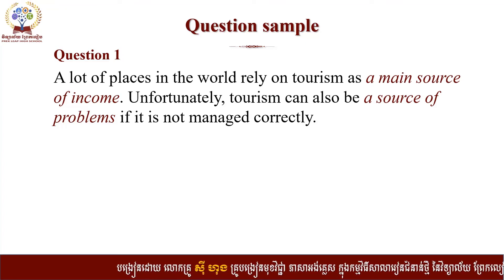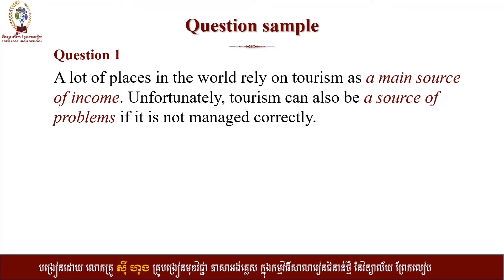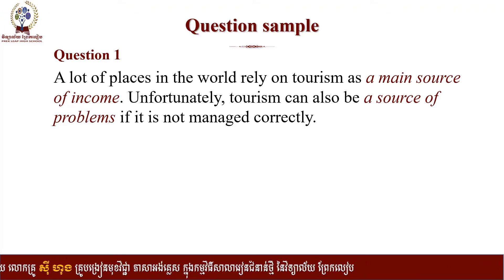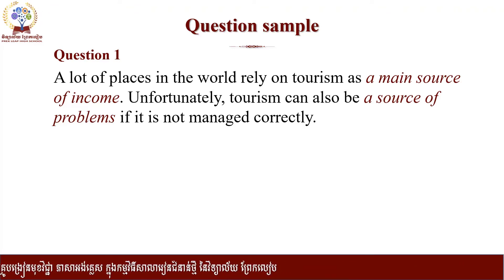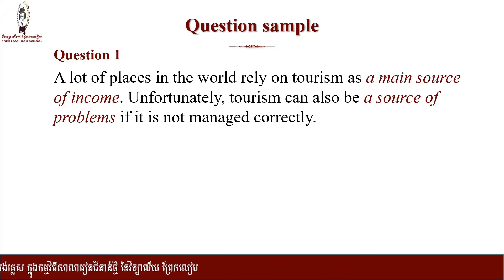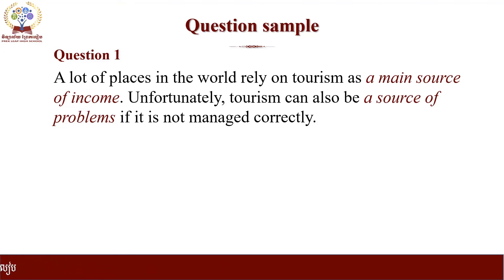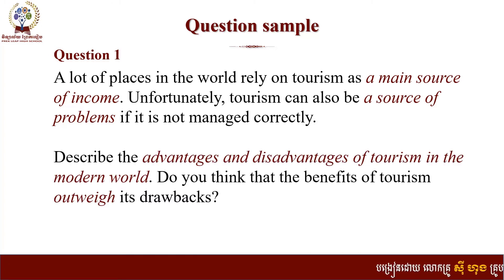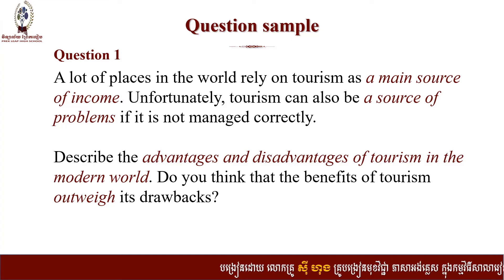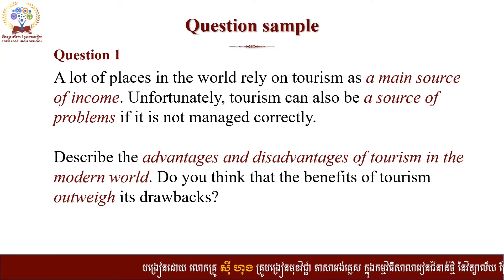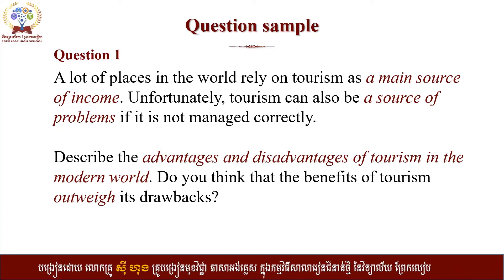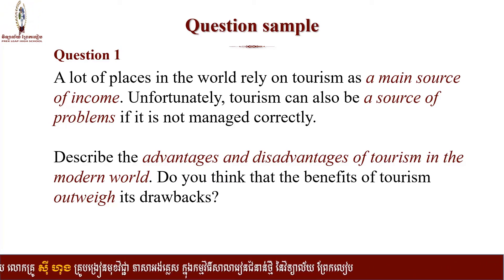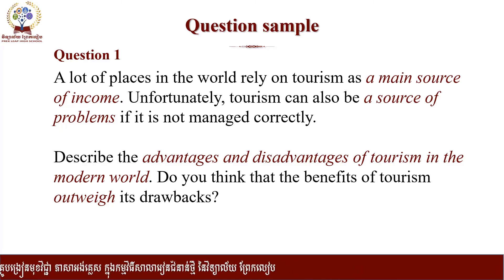As you can see here: a lot of places in the world rely on tourism as a main source of income — this is a good point or advantage. Unfortunately, tourism can also be a source of problems if it is not managed correctly — this is the disadvantage. Then you see the question: 'Describe the advantages and disadvantages of tourism in the modern world.' So you can identify: oh, it is a pros and cons essay, so you start planning your notes.